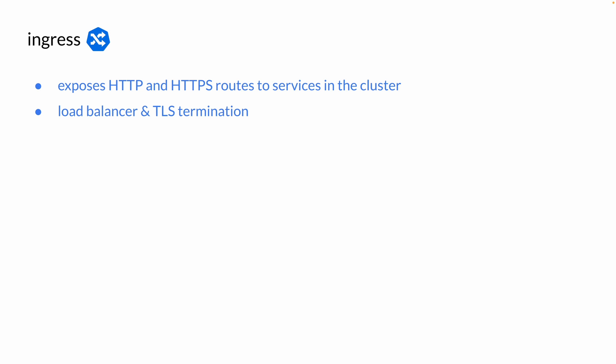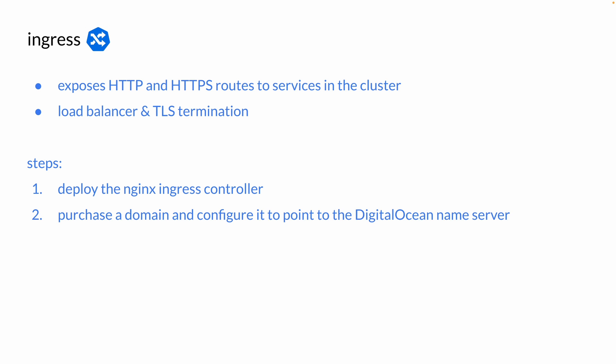There are only three things that you have to do to make this happen. We first have to deploy an ingress controller — in our case, we're going to be deploying an nginx ingress controller. And you have to have a domain. Then you can define and apply the ingress resource, which defines the routing rules to different services you might have.